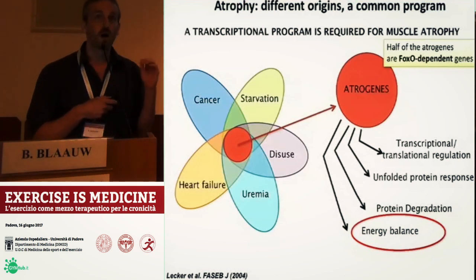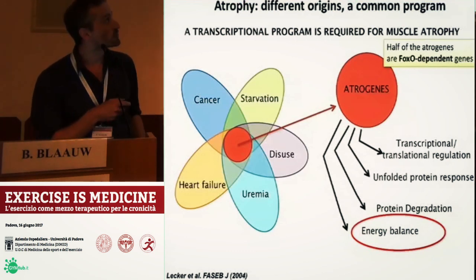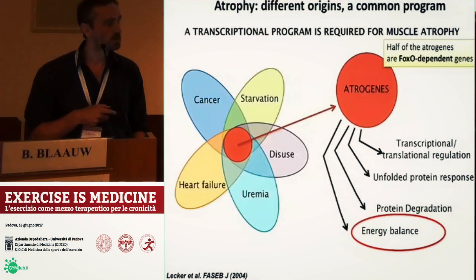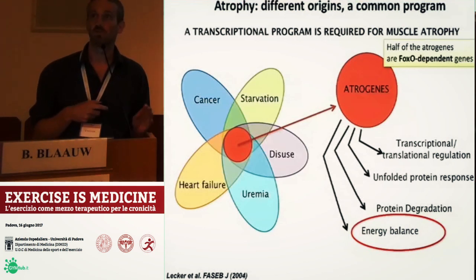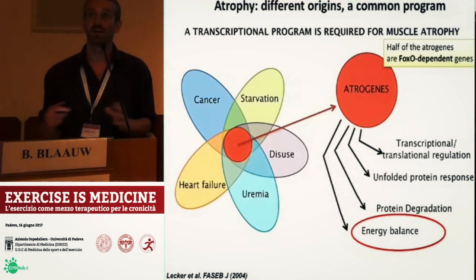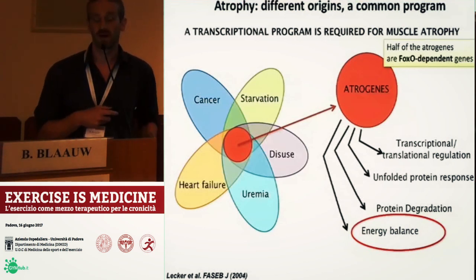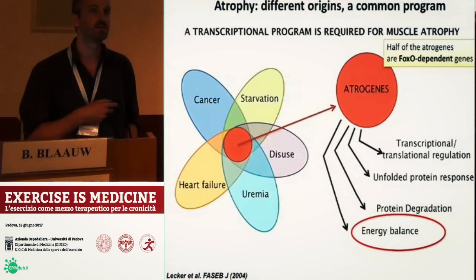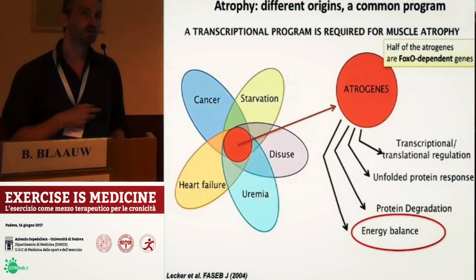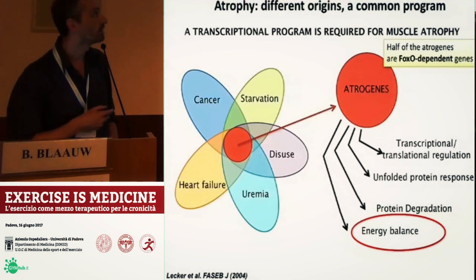Last but not least, amongst these atrogenes we found multiple genes linked to both glycolytic and oxidative metabolism, suggesting that energy balance clearly has a major role in regulating muscle wasting.